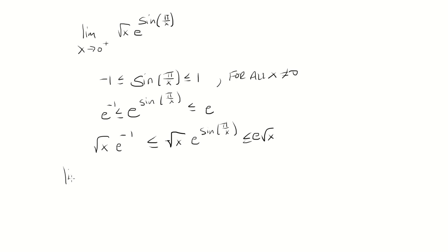And so if I take the limit as x approaches 0 from the right of square root of x e to negative 1 and e square root of x, I'm going to get 0 for both of these.